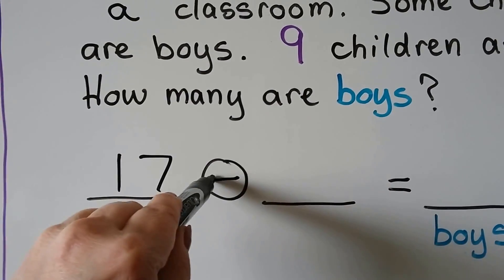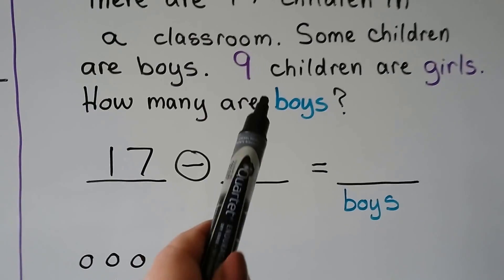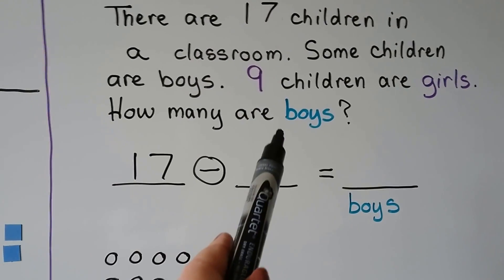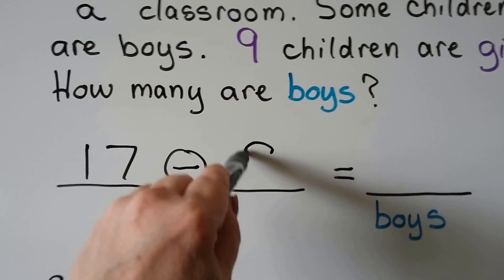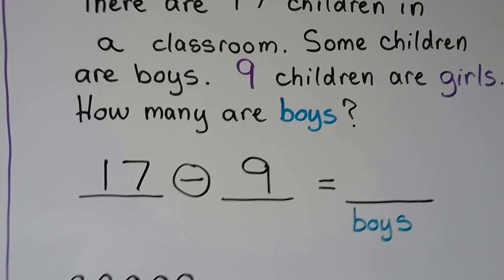So the 17 is going to be our minuend. It's going to be a minus. And we know that 9 children are girls. That means the rest are boys. If we take away the 9 girls, we'll know how many boys there are.